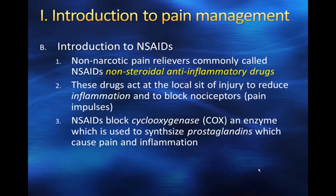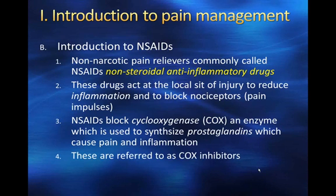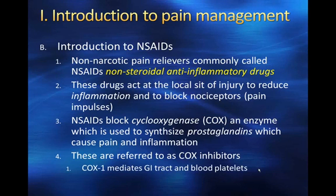NSAIDs block what is called cyclooxygenase or COX, which is an enzyme used to synthesize prostaglandins, which cause both pain and inflammation. The generation of these prostaglandins is an important process for causing both pain and inflammation, and also fever. These are often referred to as COX inhibitors. There are two different COX enzymes: COX-1 mediates the gastrointestinal tract and blood platelets, and COX-2 is associated with inflammation and our perception of pain.